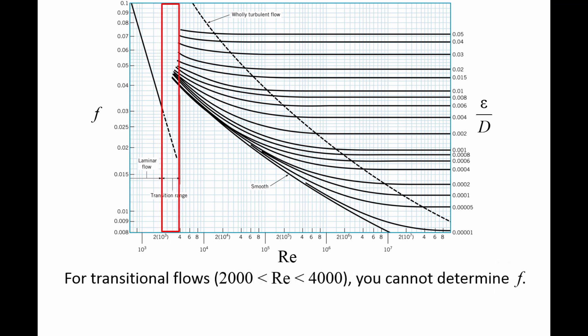If the Reynolds number is between approximately 2,000 and 4,000, the flow is in the transitional regime. There is no accurate method of determining the friction factor for this range of Reynolds numbers.